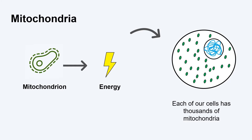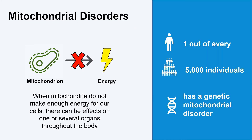There are thousands of mitochondria in most of our cells, all creating the energy they need to function properly. When mitochondria do not make enough energy for our cells, it may impact one or several organs throughout the body, like the heart, brain, or muscles. We call this a mitochondrial disorder.